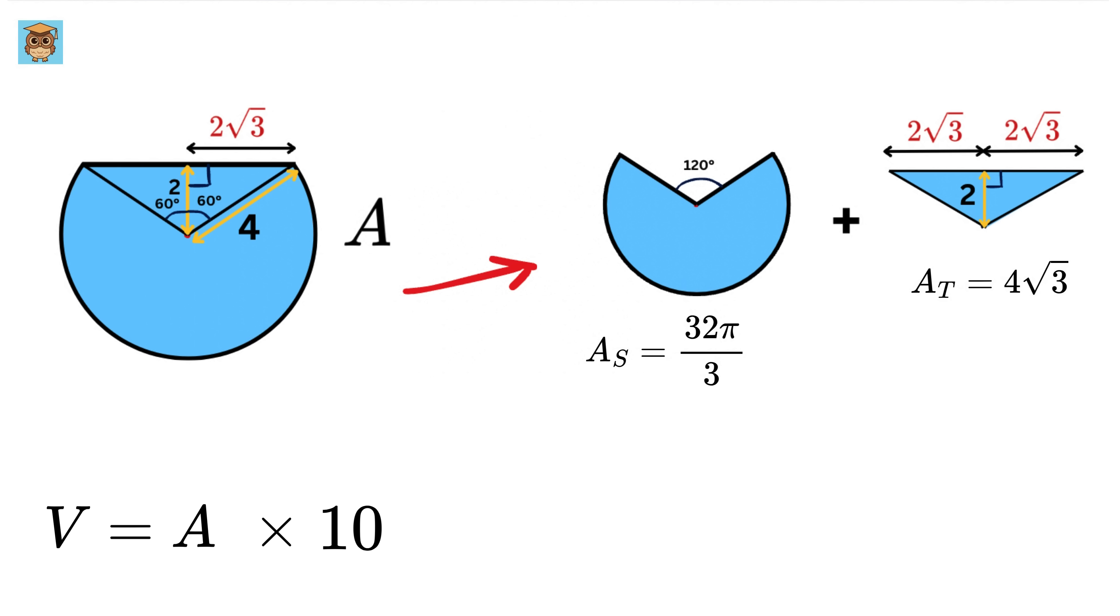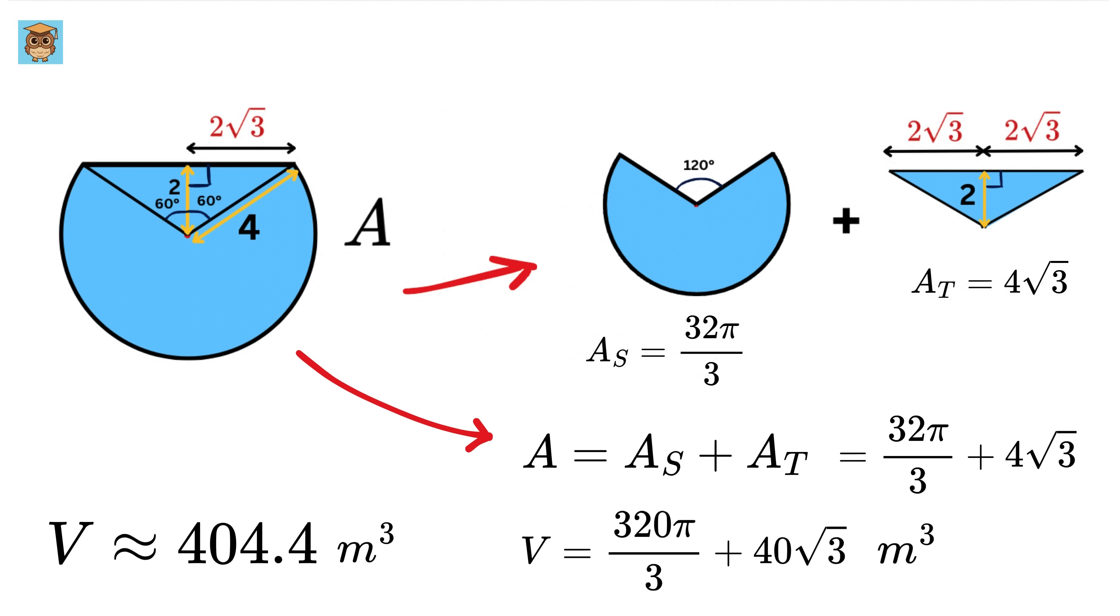So the area of this base, or A, equals 32 pi over 3 plus 4 root 3 meter square. And thus, the volume of the water in this tank will be 10 times A, or 320 pi over 3 plus 40 root 3 meter cube, which in decimals will be roughly 404.4 meter cube.